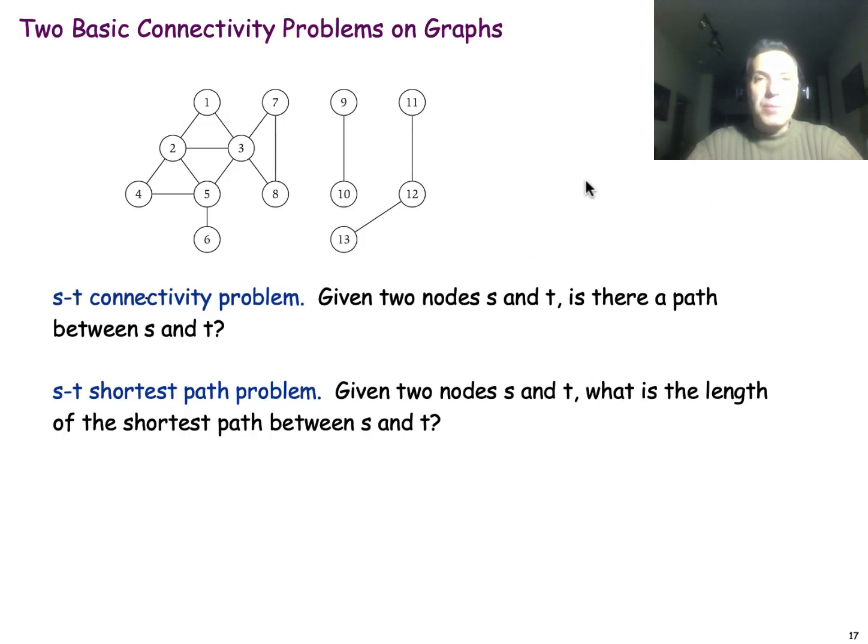Let's start with two very basic connectivity problems on graphs. The first is: if I give you a graph and ask, here is a node S, here is a node T, are these two nodes connected? In other words, is there a path between them? Another way to ask this question is, are the two nodes in the same connected component? In this example, nodes 1 and 9 are not connected through a path. This is very easy to see visually here, but if I give you a graph with one billion nodes, you will need an algorithm to do this.